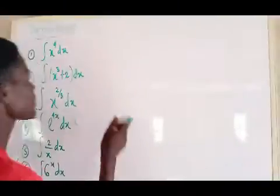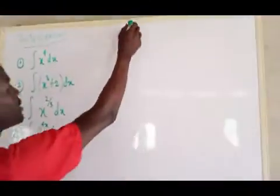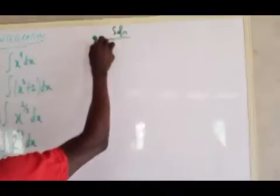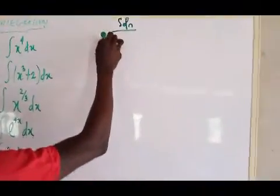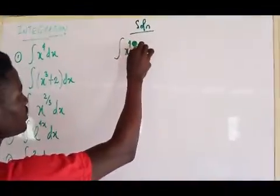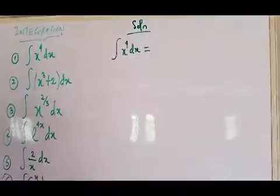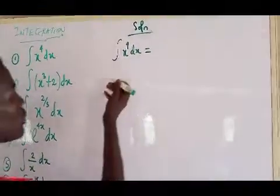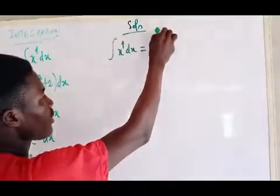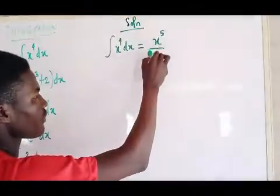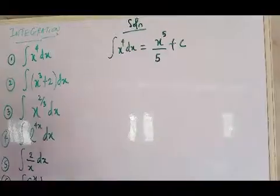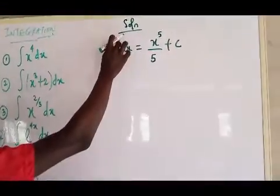The first example: integral of x to the power 4 dx. This is very simple — add one to the power, that becomes 5, so the answer is x to the power 5 over 5, plus c. Very simple.